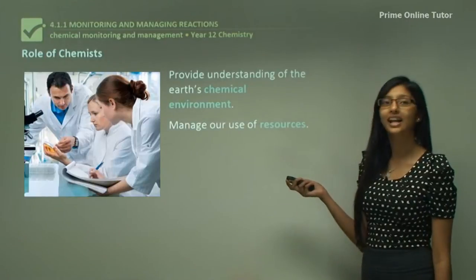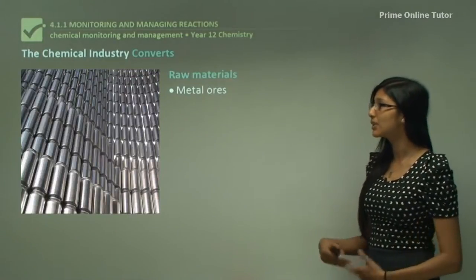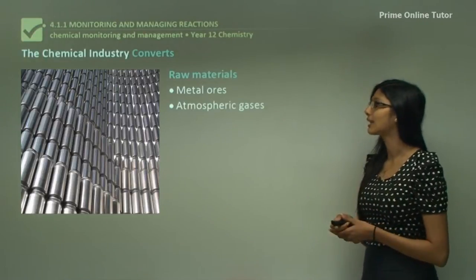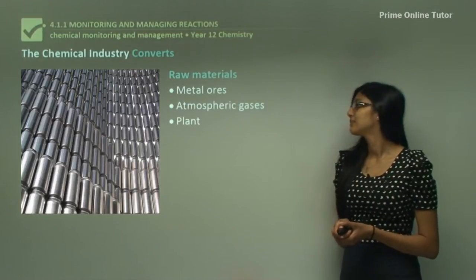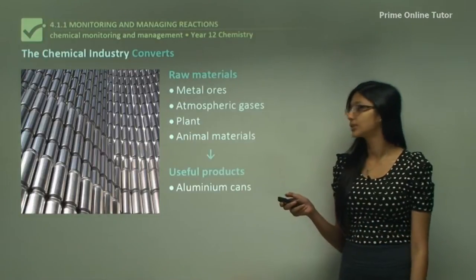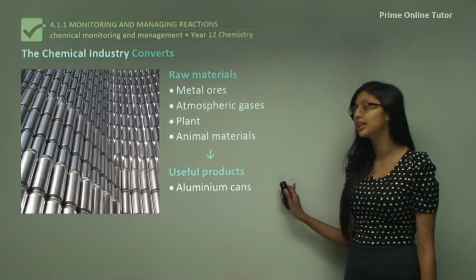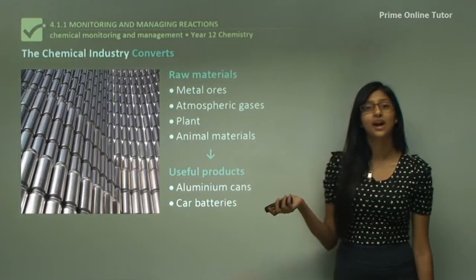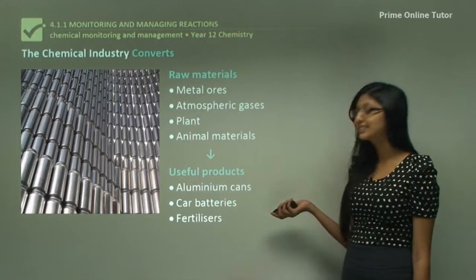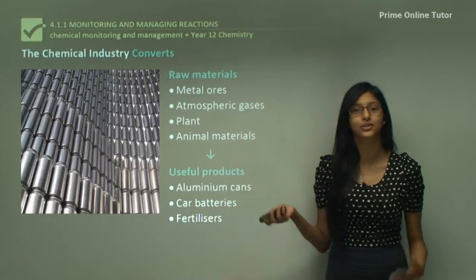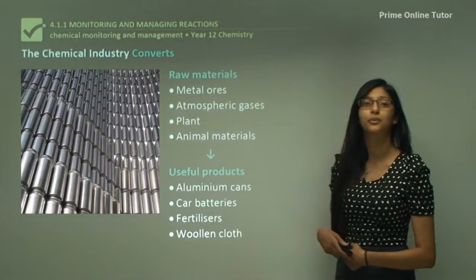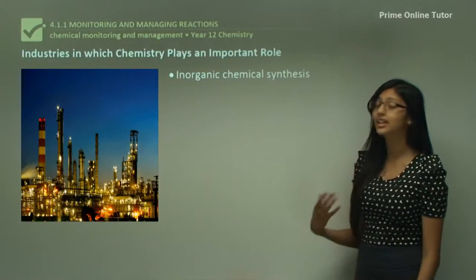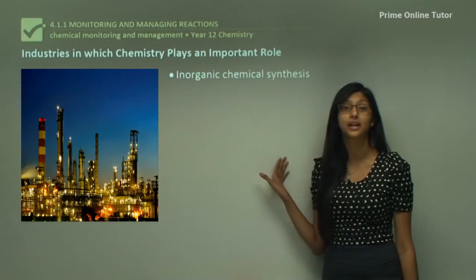Now let's look at our industry. The chemical industry converts raw materials such as metal ores, atmospheric gases, plant and animal materials into very useful products such as aluminium cans that we use in our soft drinks, car batteries we use to drive our cars, fertilizers that farmers use to grow crops, and woolen clothes that we wear every day.